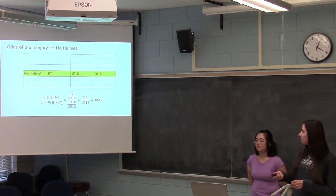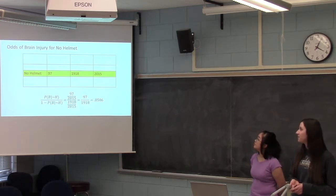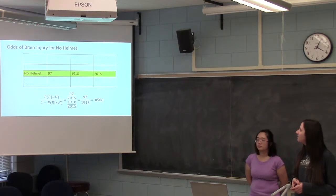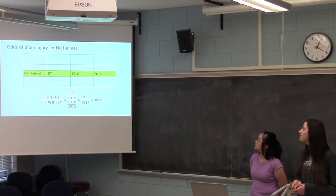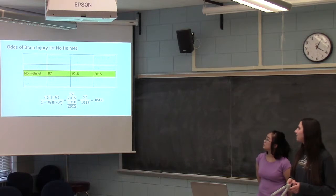So then we're also going to look at individuals that were not wearing helmets, and we're going to take the number of individuals that had a brain injury, which was 97, and divide it by the total number of accidents of individuals that were not wearing helmets, which is 1918. So we take 97 over 1918, we get 0.0506.